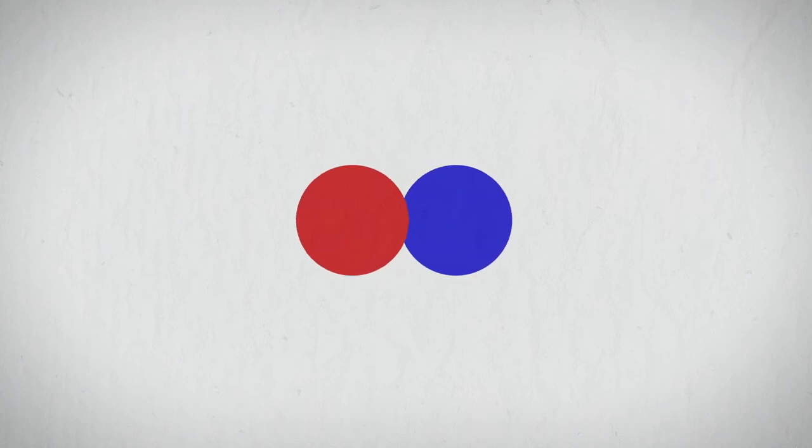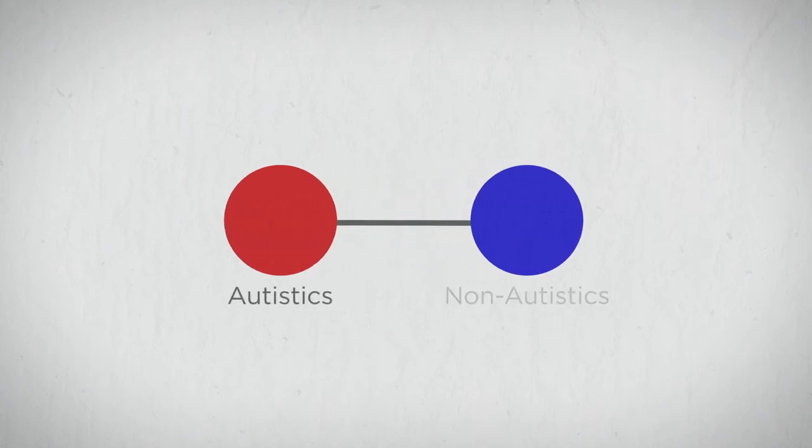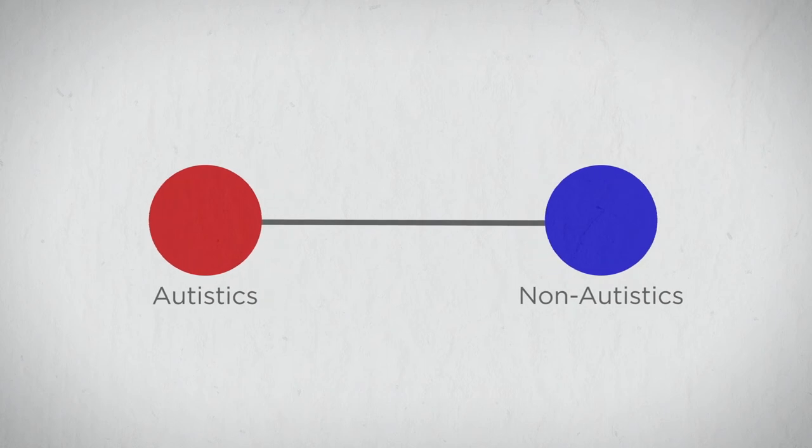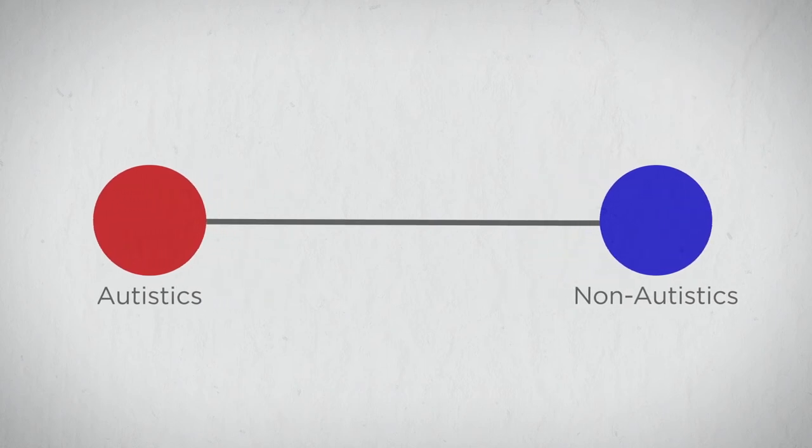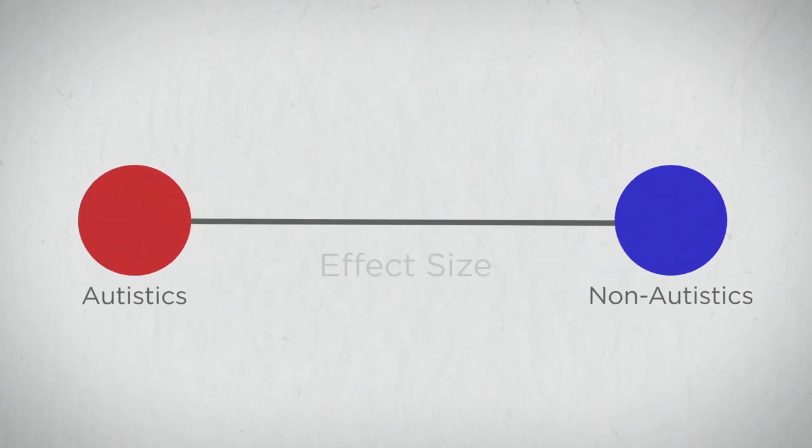When we want to understand in which aspects autistic and non-autistic people differ, we compare a group of autistics to a group of non-autistics and we measure the difference between both. The extent of this difference is called effect size.